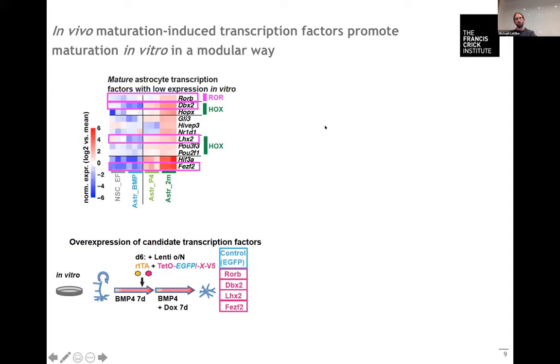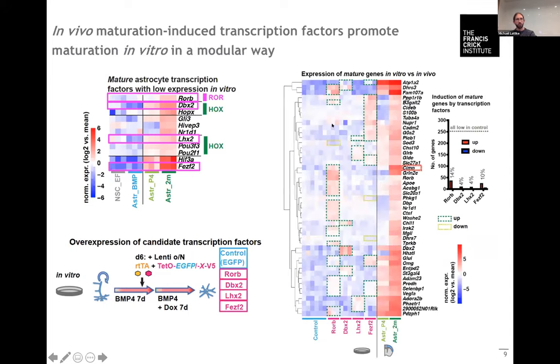Indeed we found that each of these transcription factors induces different subsets of the mature astrocyte genes in a largely non-overlapping way. So it seems that multiple of these mature astrocyte transcription factors in a modular way induce the mature astrocyte genes.